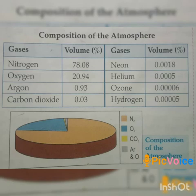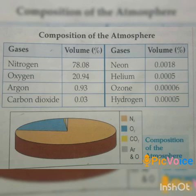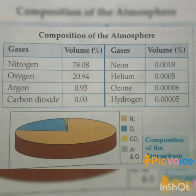Apart from these three major gases, the atmosphere also has some other gases like argon, helium, methane, etc. in small volumes. The water vapors and dust particles are the other important components present in the atmosphere. The water vapors are mainly concentrated near the oceanic areas as compared to land. The dust particles play a significant role in the process of condensation. These are also called hygroscopic nuclei as they provide a center around which a raindrop forms. Both the water vapors and dust particles are found in the lower layer of the atmosphere.